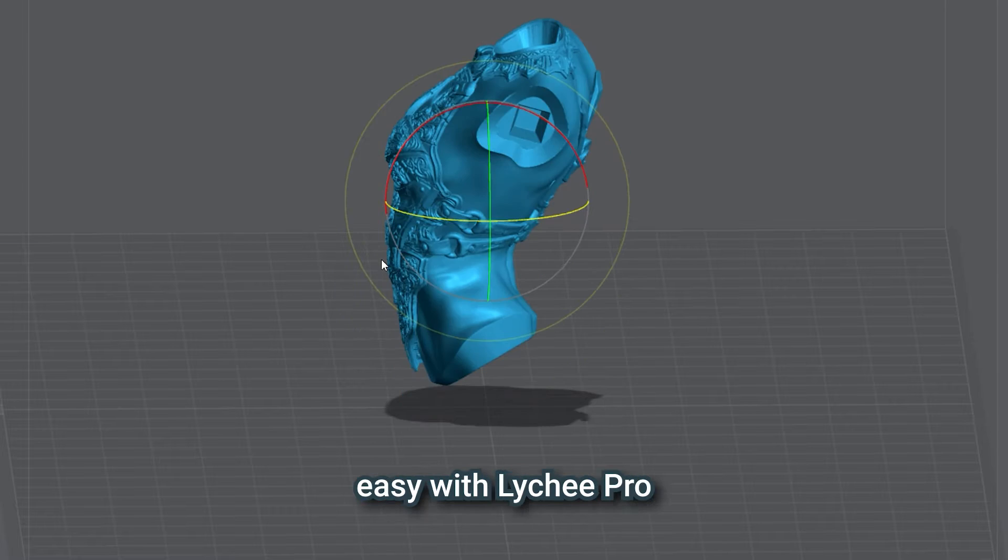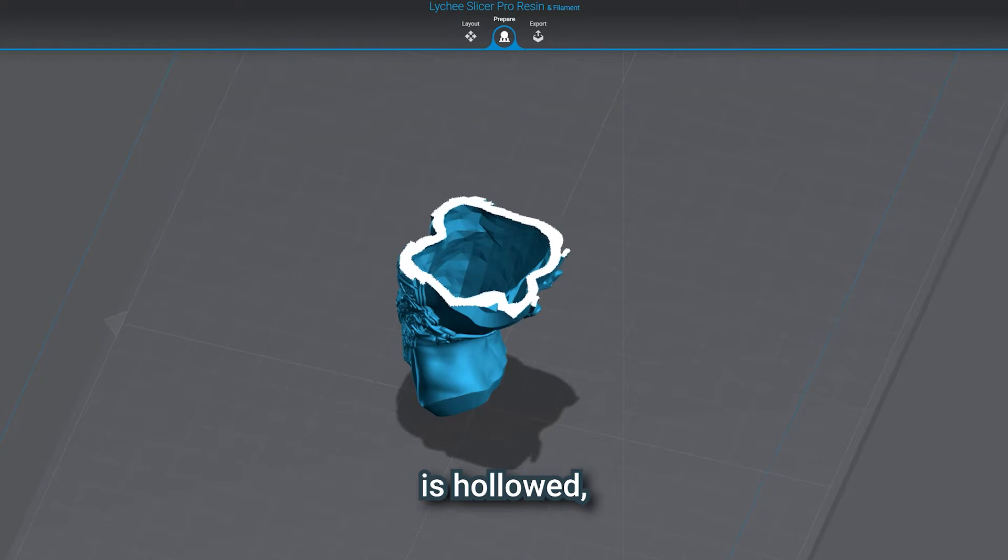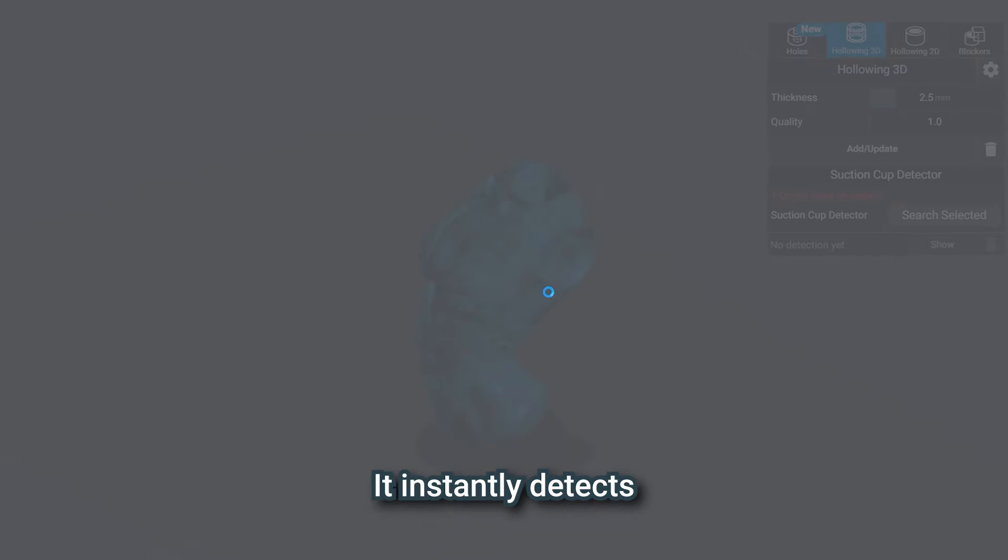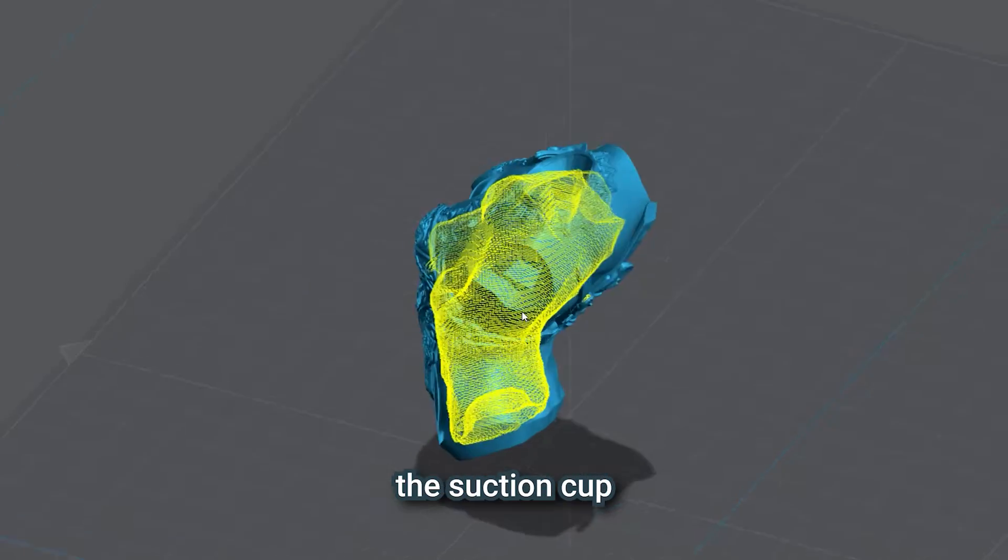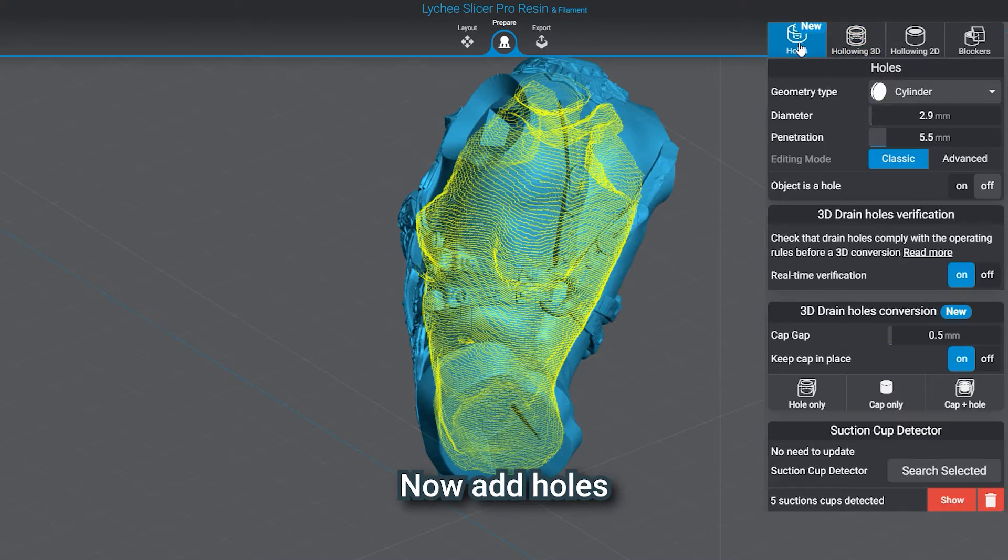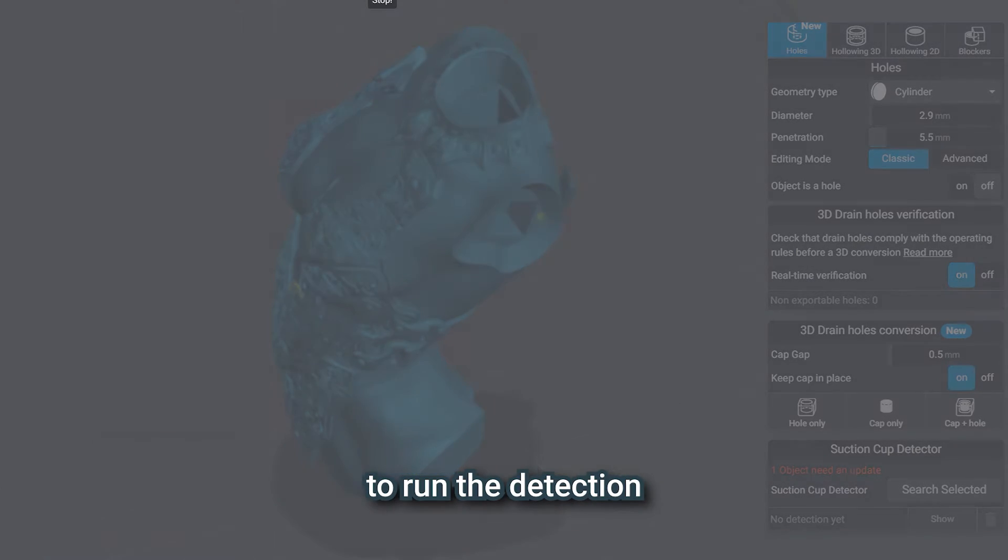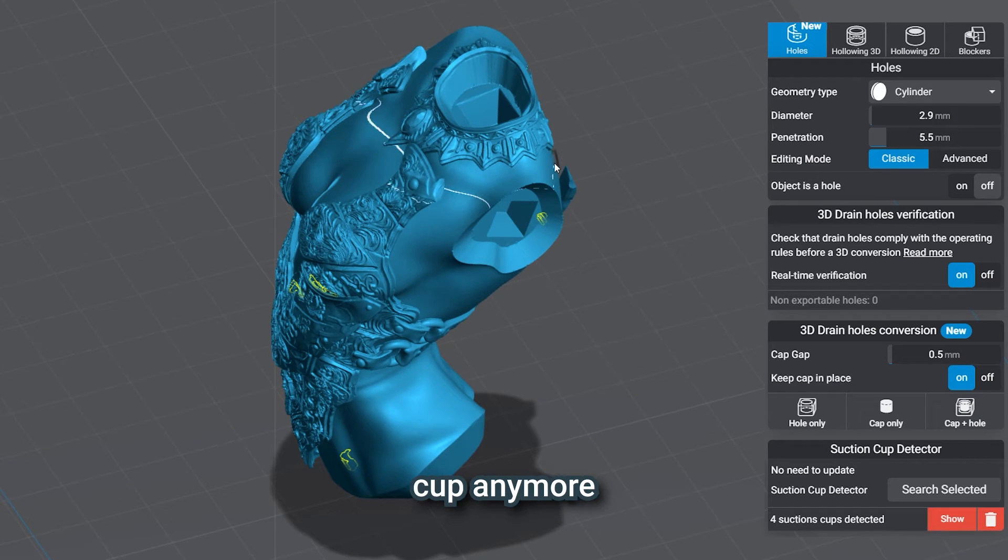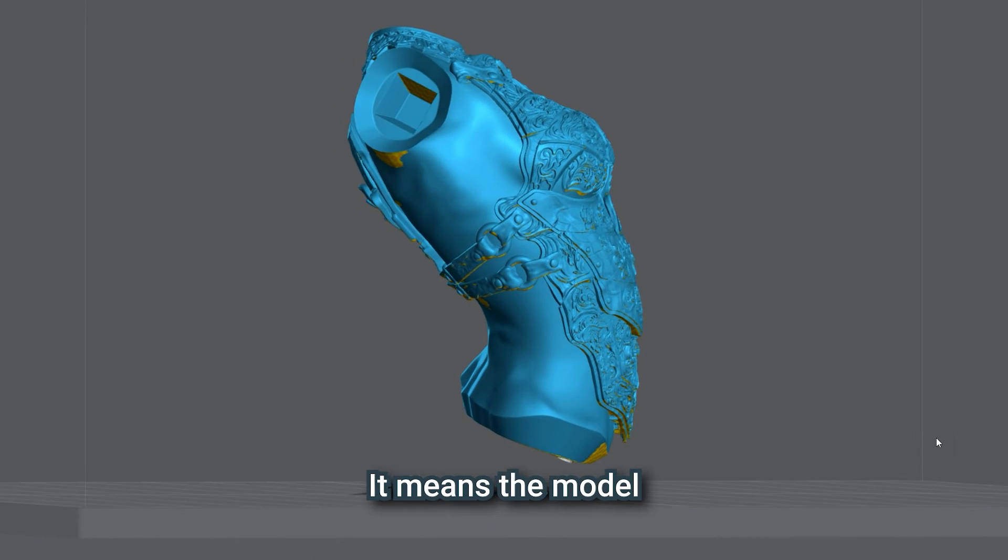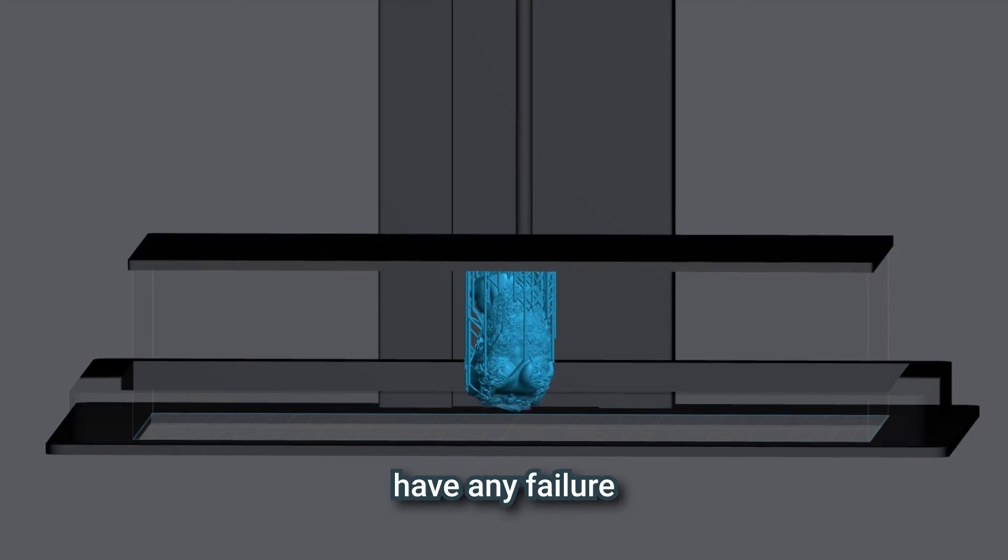To do so, it's super easy with Lychee Pro. Once your model is hollowed, click on the suction cap detector. It instantly detects and highlights the suction cap that would happen. Now, add holes to create openings. Click one more time to run the detection, and make sure you don't have any suction cap anymore. No more yellow? It means the model is ready to print, and you won't have any failure.